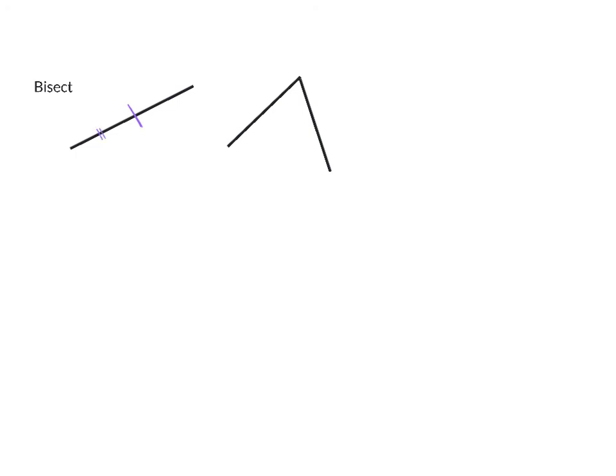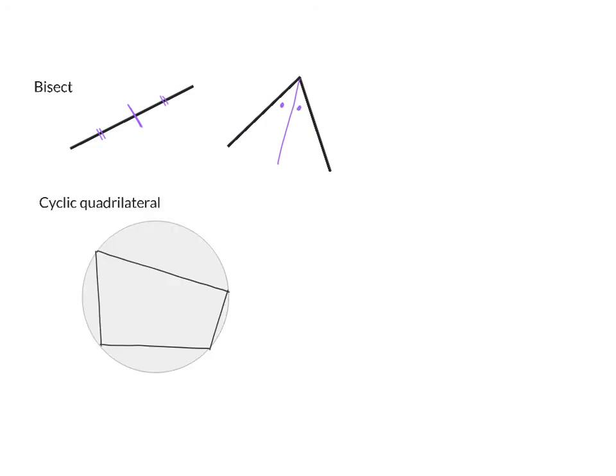Another term you need to know is the word bisect. Bisect in geometry can either apply to a straight line or to an angle. When used with a straight line, bisecting the line means dividing it into two exactly equal parts. Similarly, when used with an angle, it means dividing the angle into two equal parts. The next important word you need to know is a cyclic quadrilateral — a cyclic quadrilateral consists of four chords, meaning that every single angle of this quadrilateral is on the circumference of the circle.